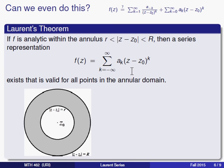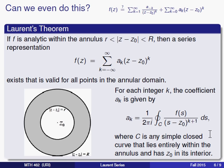This series will converge to f if we find the right coefficients. The coefficient a_k is given by a formula involving an integral around c, where c is any simple closed curve that lies within the annular region and encloses the point z₀. Now where did this come from? You'll remember that for Taylor series there was a formula for a_k that involved taking the k-th derivative and evaluating it at z₀, then dividing by k factorial.